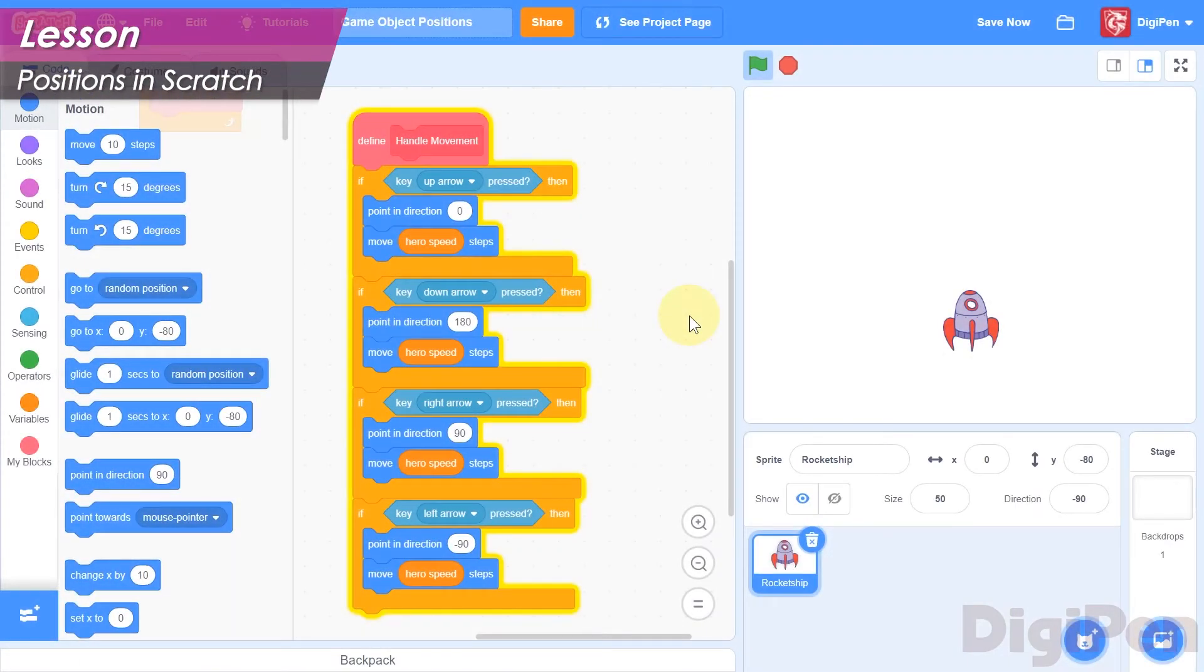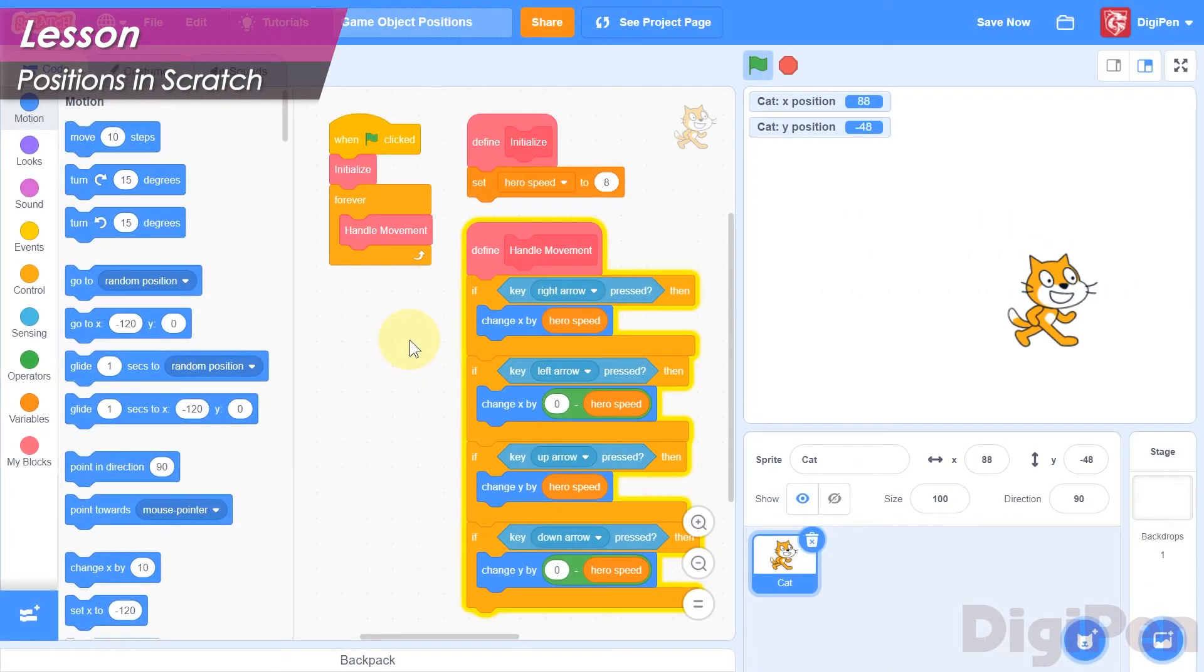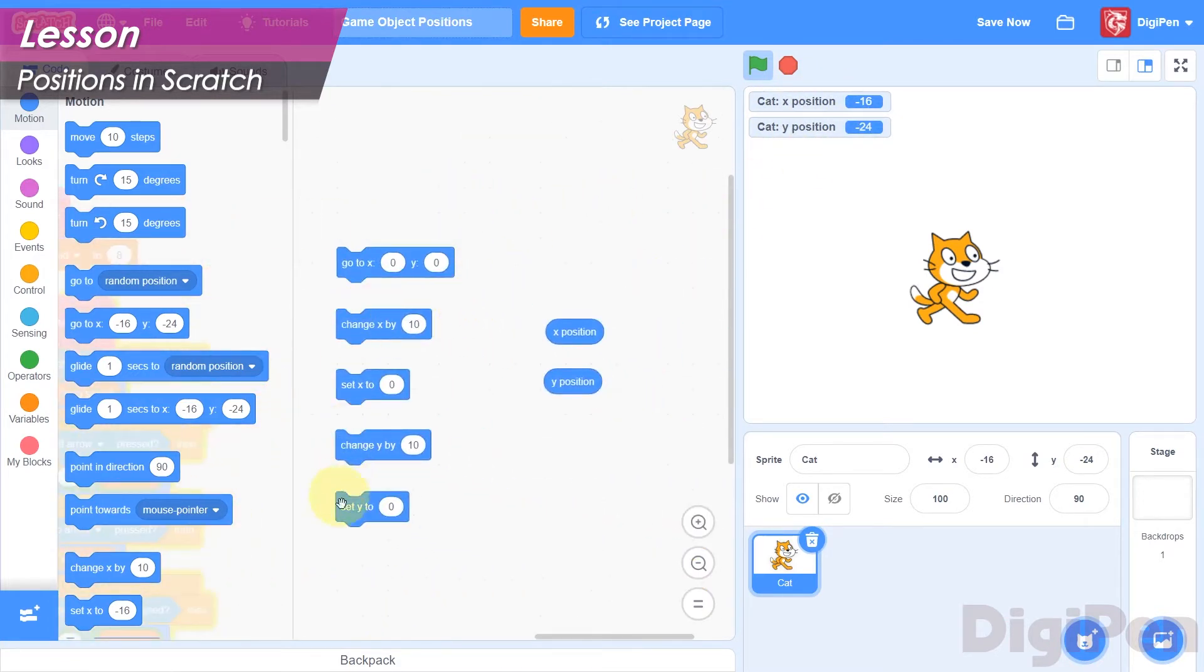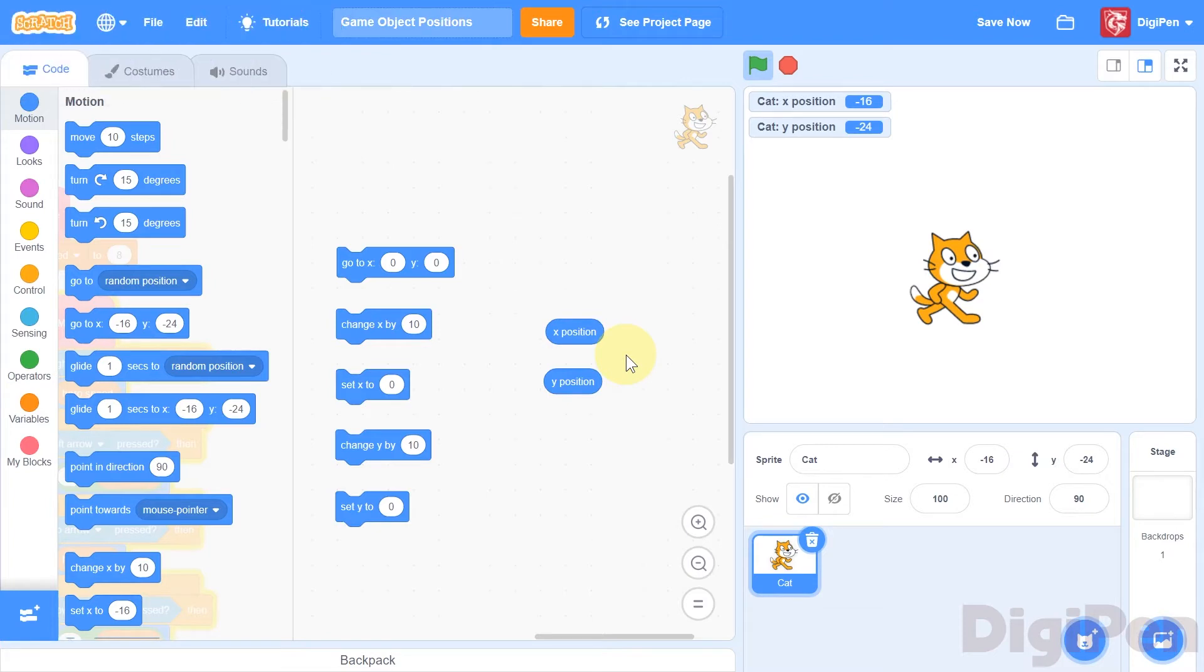So far in these videos, we've always moved our sprites around by pointing them in a direction, and using the move block to make them go in that direction. Now we have another way that we can move our sprites around, by modifying their x and y coordinates directly. Scratch has a set of blocks in the motion category that do this. It also has a pair of reporter blocks that can be used to get a sprite's coordinates.